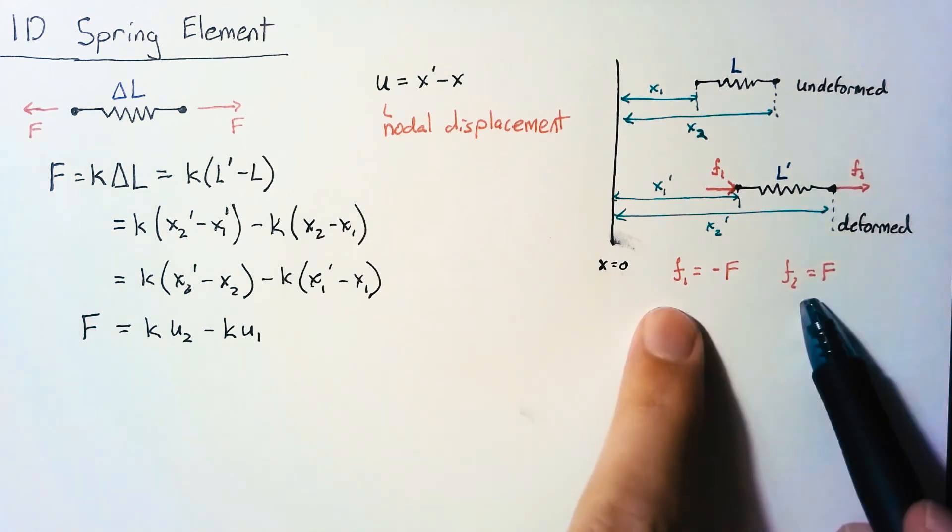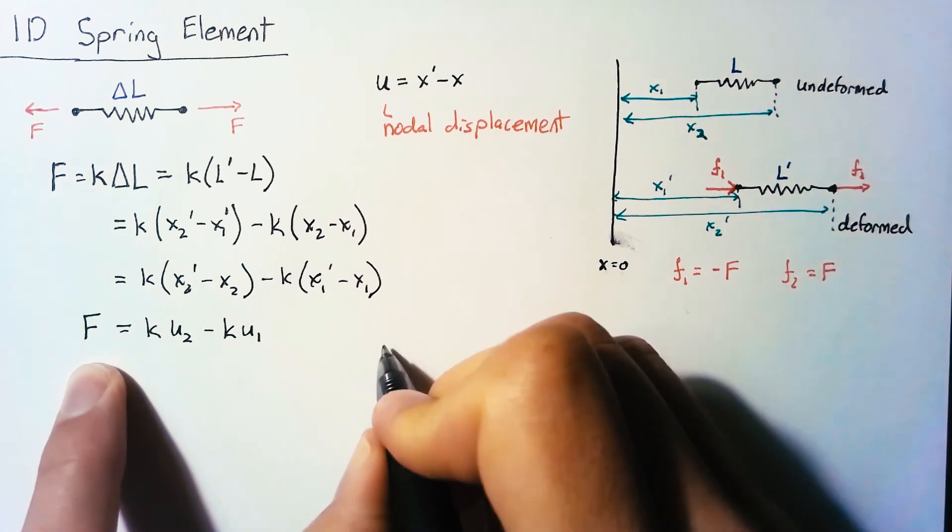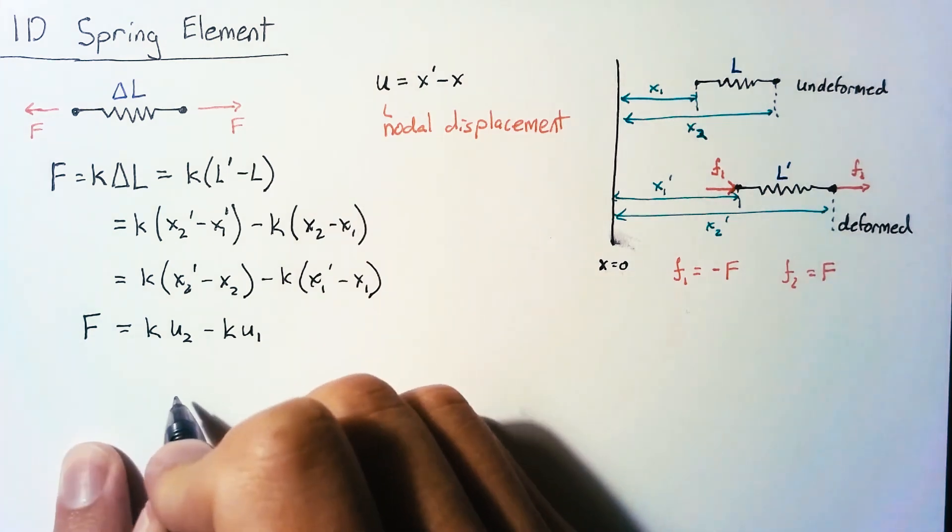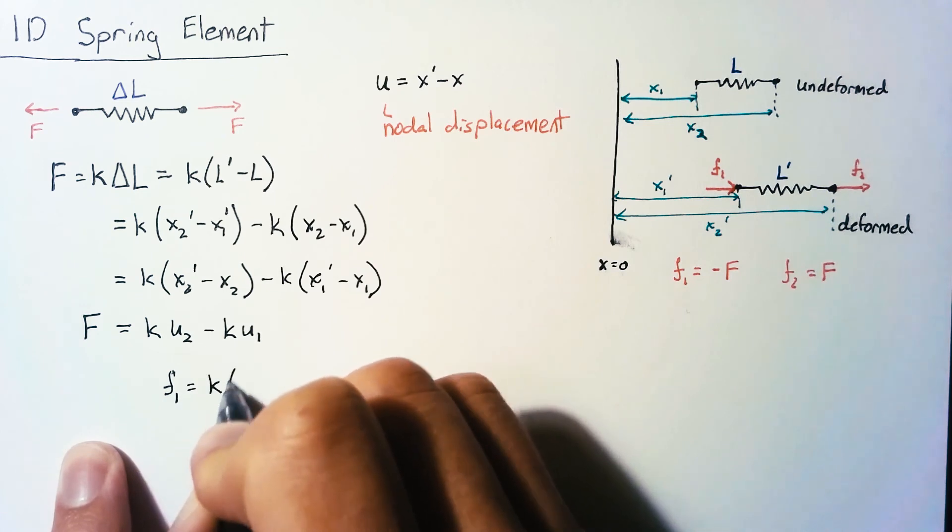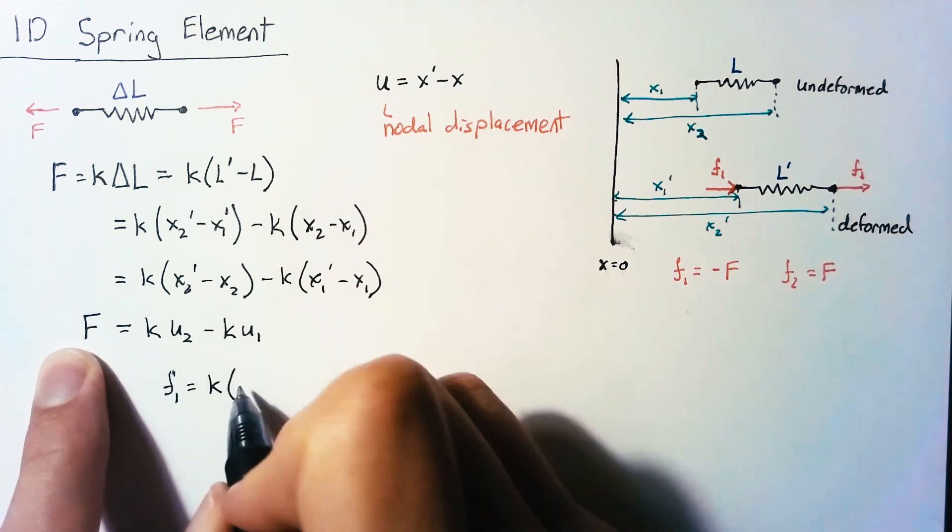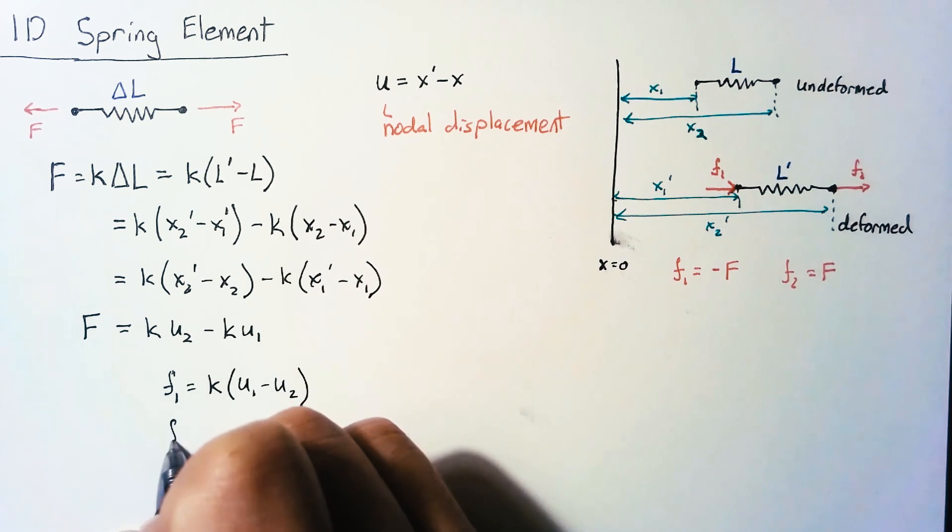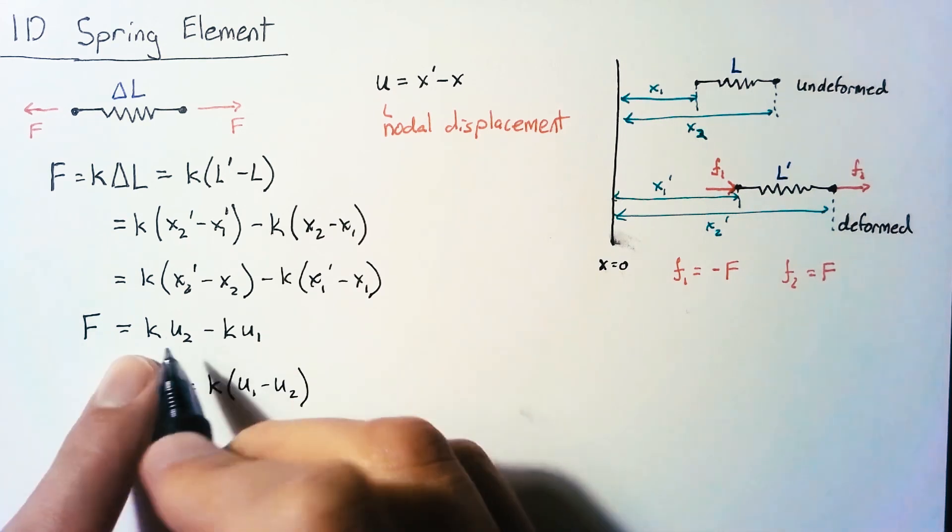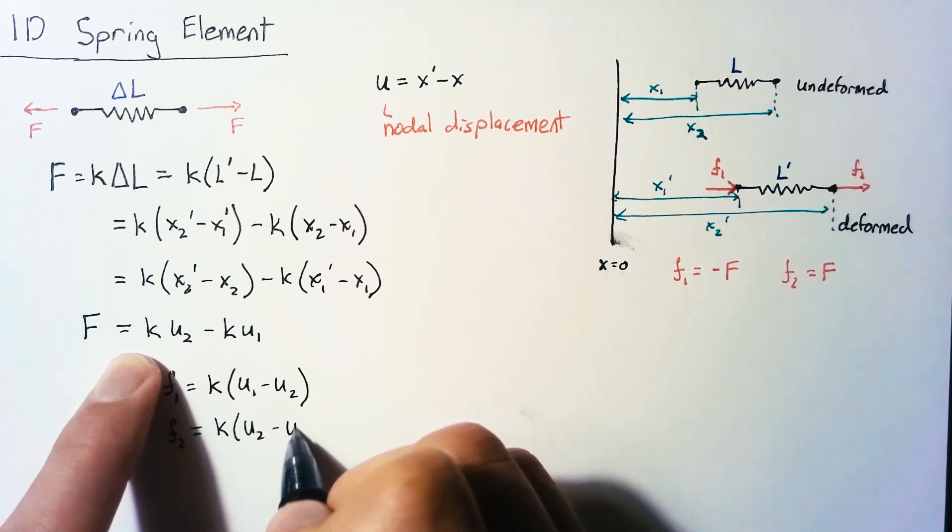So using these two definitions we can write two equations, the first of which says that f1 is equal to k times, and this is equal to negative f so we have an extra negative sign here, so this will be u1 minus u2. Then f2 is just equal to f and so we'll end up with exactly the right hand side or u2 minus u1.